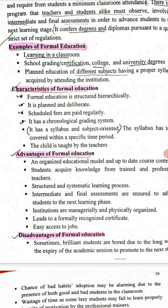Now we see the characteristics of formal education. Formal education is structured — it is planned and deliberate. Fees are paid regularly and it is an organized system. It has a syllabus and is subject-oriented, with the child taught by teachers.